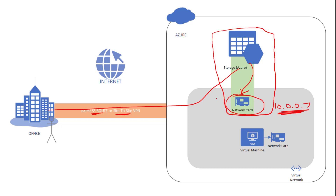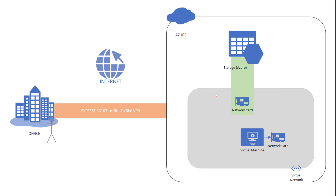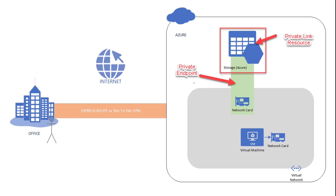Earlier, this was only a public service. Now, this becomes a private service through this Azure Private Endpoint. The connectivity is provided by Microsoft Private Endpoint, and the resource itself that is extended into the network is called a Private Link Resource.